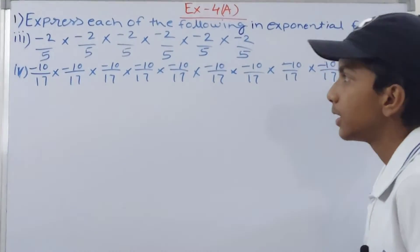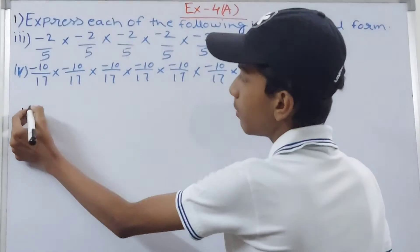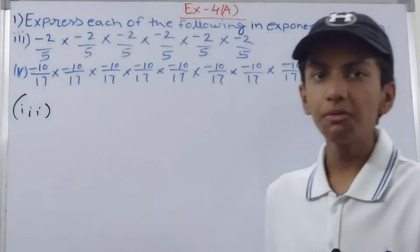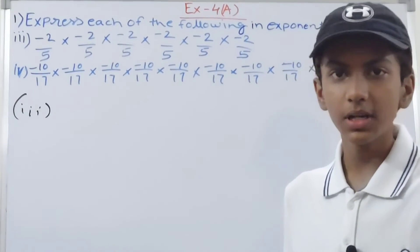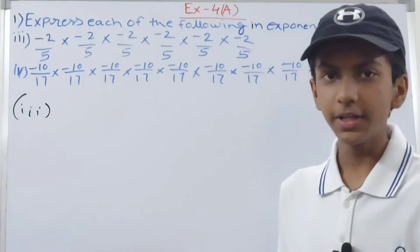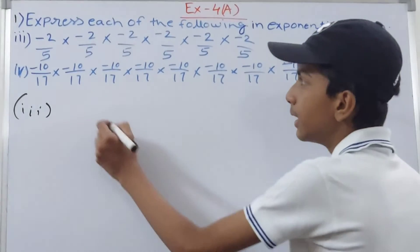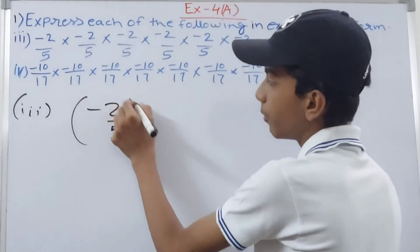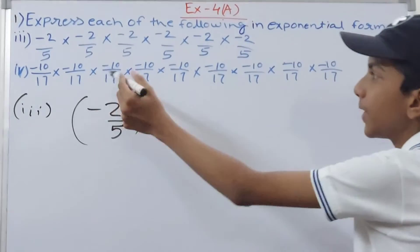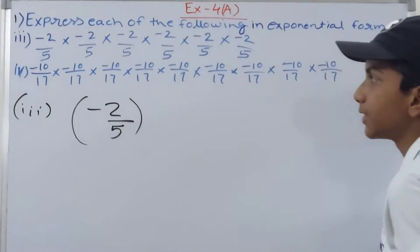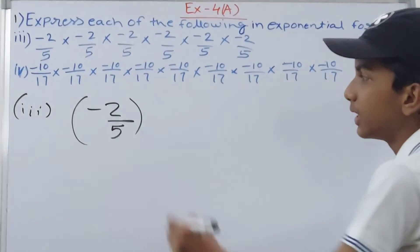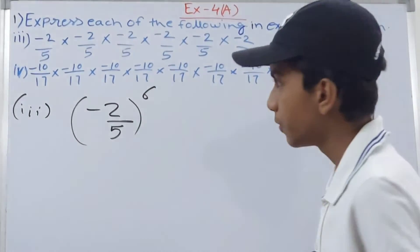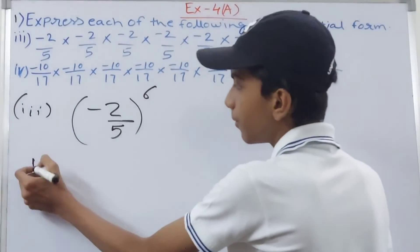Now the third part: we've got minus 2 upon 5 into minus 2 upon 5 and so on. Again we will count the number of times we are multiplying our base. What is our base? Minus 2 upon 5. First write the base: minus 2 upon 5 in brackets. How many times is it? 1, 2, 3, 4, 5, and 6 - six times. So this 6 becomes our exponent or power.